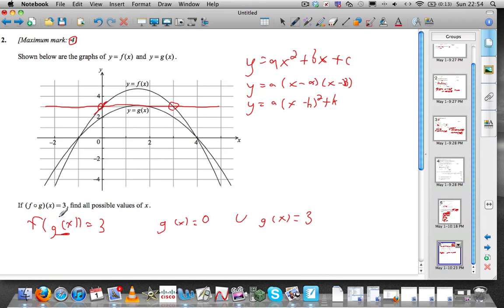So when does f of something give us three? When that something is three, that something is g of x. So g of x must also be three. So now we come to the second part.